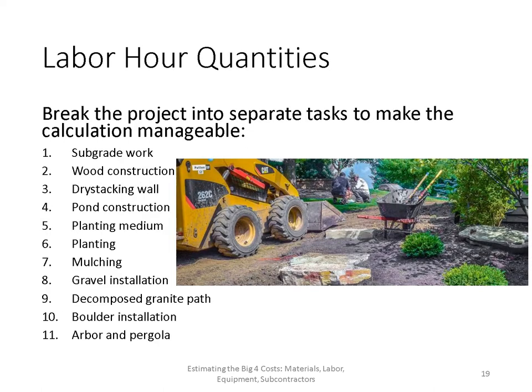To make a big job manageable, break the project into separate tasks. For a landscape installation, these tasks might include subgrade work, wood construction, wall construction, a pond, soil amendment, planting, mulching, gravel, decomposed granite pathways, boulder installation, arbors, pergolas, and fences. Some of these tasks you may subcontract out. Estimate the working hours required for each task separately.